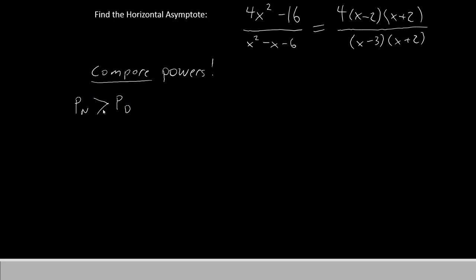The power in the numerator could be greater than the power in the denominator, or it could be the same. Now if the power in the numerator is greater than the power in the denominator, in that case you will have no horizontal asymptote. It won't exist.